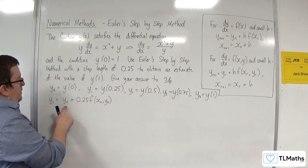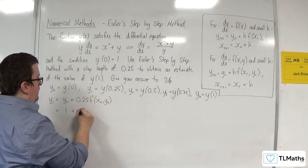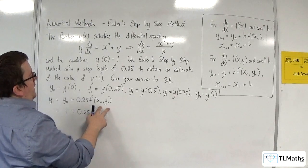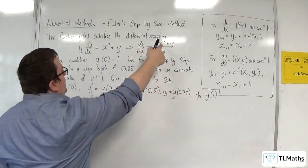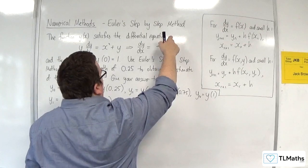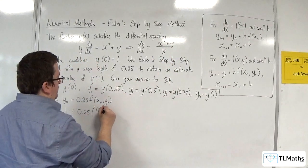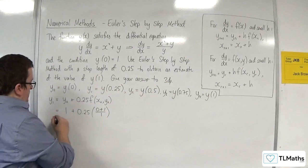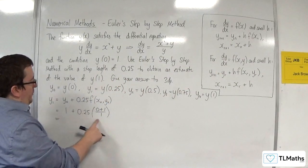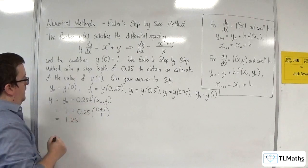So y₀ is y of 0 in this case, which is 1. And I'm substituting x₀, y₀, so 0, 1 into this. So I get 0 plus 1 over 1. So that's just 1. So I've got 1 plus 0.25 times 1, so 1.25. And that's y₁.